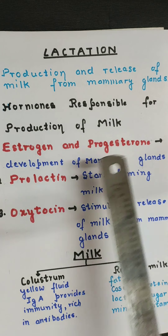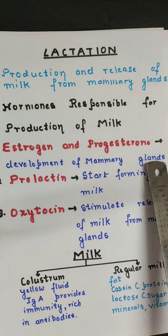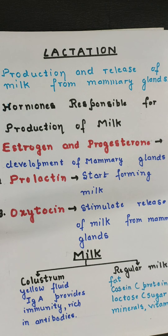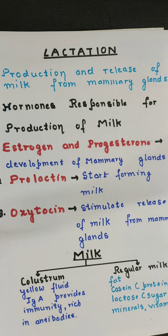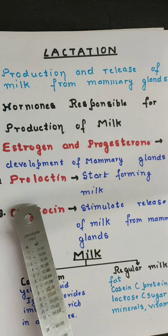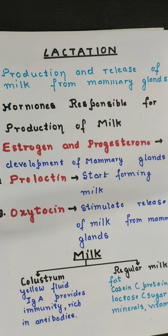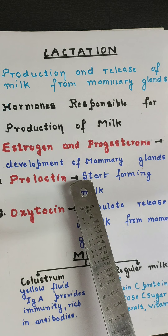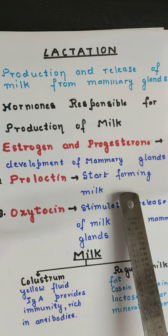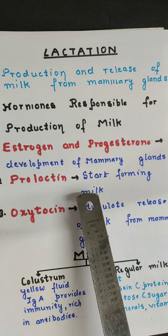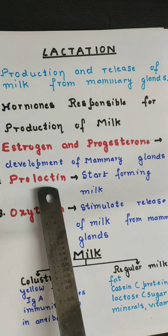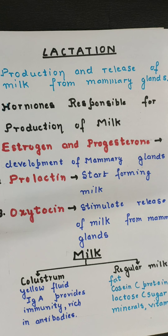Lactation is also controlled by hormones. During pregnancy, the two hormones estrogen and progesterone help in the development of the mammary glands — the size of the mammary glands increases during this time. The second hormone, prolactin, is released by the pituitary gland. Prolactin — from 'lactin' meaning lactose — is responsible for the formation of milk at the end of pregnancy.